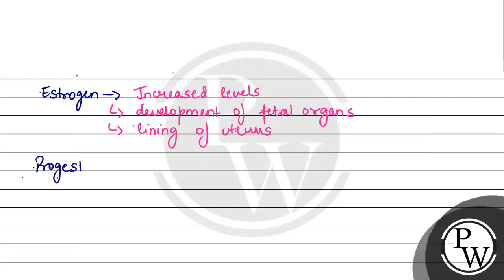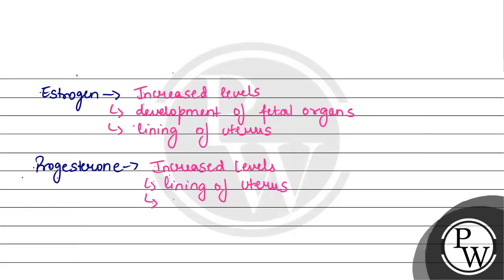Progesterone hormone में भी throughout the pregnancy इसके levels elevated रहते हैं. ये भी uterus की lining बनाने में help करता है - ये lining generally blood की lining होती है. इसके अलावा ये early contractions को prevent करता है. Pregnancy में early contractions से baby और mother दोनों पर effect पड़ता है, तो ये progesterone उसके prevention में help करता है.